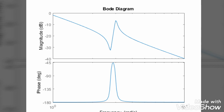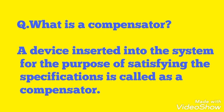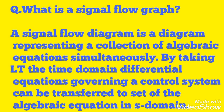The Nichols chart consists of M and N contours in the log magnitude versus phase diagram. A compensator is a device inserted into the system for the purpose of satisfying specifications. A signal flow graph is a diagram representing a collection of algebraic equations simultaneously; by taking the Laplace transform, the time domain differential equations governing a control system can be transferred to a set of algebraic equations in the S domain.